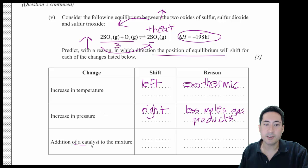Next, adding a catalyst to the mixture. That's going to have no change at all. And the reason being is the forward and reversed reactions are going on at the same rate, both increase. So it's dynamic equilibrium.